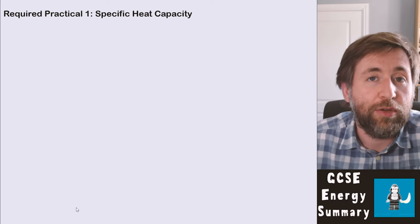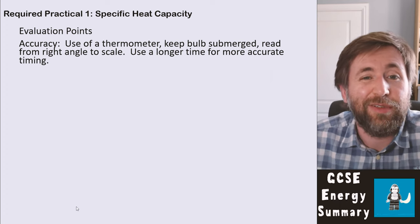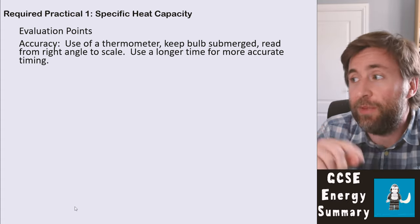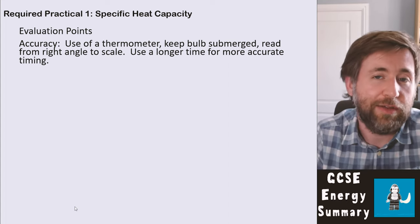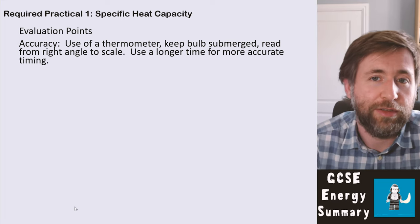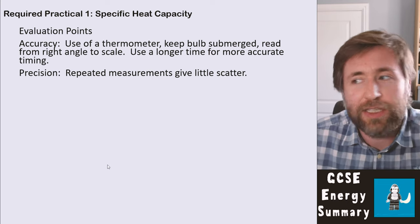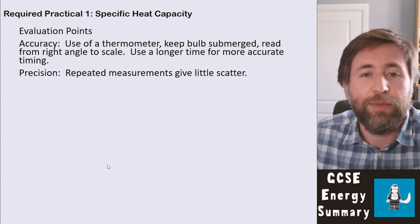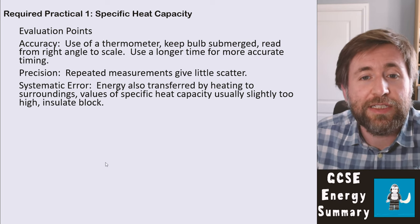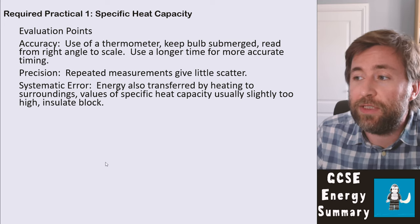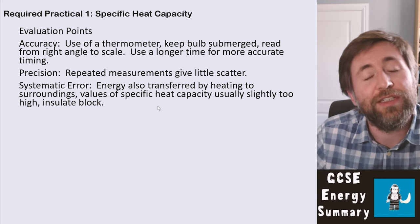It's really useful to memorize evaluation points for required practicals. For accuracy: keep the thermometer bulb submerged while reading, read at right angles to the scale to avoid parallax error, and use a longer time for more accurate timing. For precision: take repeated measurements and check for low scatter from the mean. A systematic error in this experiment is that energy is also transferred to the surroundings by heating, so the specific heat capacity values obtained are usually a little too high. One way to reduce this is to insulate the block.